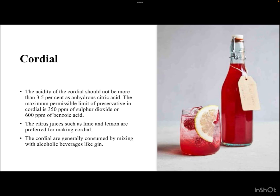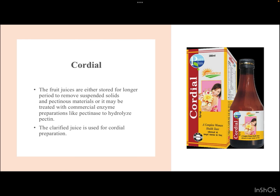The maximum permissible preservative limit in cordial is 350 ppm of sulfur dioxide or 600 ppm of benzoic acid. Citrus juices such as lime and lemon are preferred for making cordial, which is generally consumed by mixing with alcoholic beverages like gin. Fruit juices are either stored longer to allow suspended solids and pectinous material to settle, or treated with commercial enzyme preparations like pectinase to hydrolyze pectin and produce a clear, sparkling cordial.